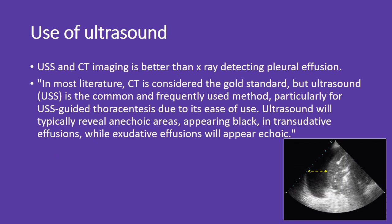Small effusions greater than 175 mL will appear as obliteration of the costophrenic angle. Ultrasound (USS) and CT imaging are better than X-ray for detecting pleural effusion. CT is considered the gold standard in most literature, but ultrasound is the commonly used method, particularly for USS-guided thoracentesis due to its ease of use. Ultrasound typically reveals anechoic areas (appearing black) in transudative effusions, while exudative effusions appear echoic.